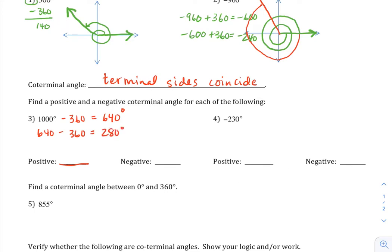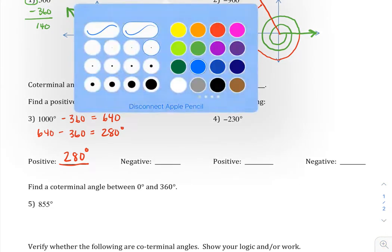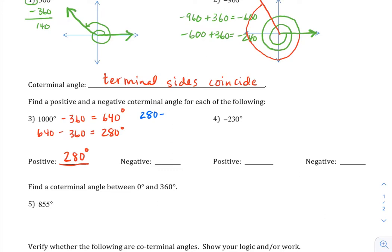That also is another positive degree measure that is coterminal. I'll put that one there. Now to get a negative one, I still need to subtract another 360 to get into the negative values and I'll get negative 80 degrees. And I can write that here.